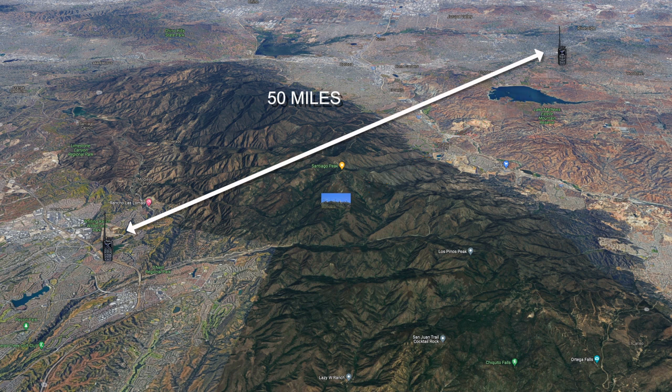When it's Dave's turn to transmit, the exact same process happens in reverse. Dave's signal from his radio is received by the high-elevation repeater station on Santiago Peak and retransmitted so that Bob's radio in Orange County can hear the repeated transmission. This all happens in real time.